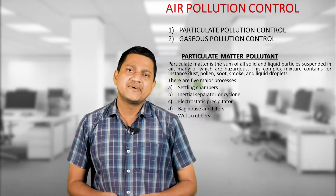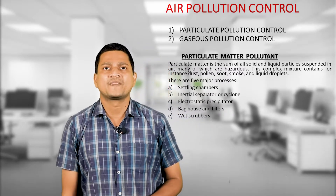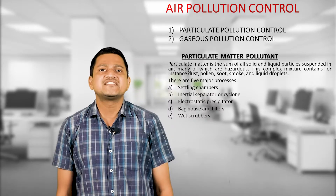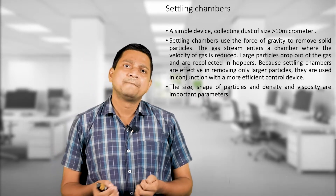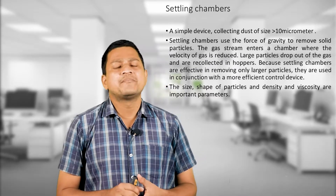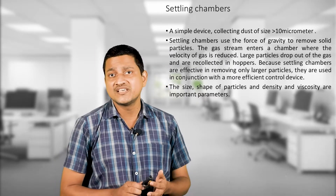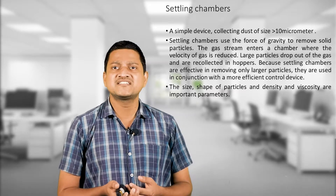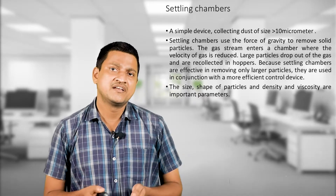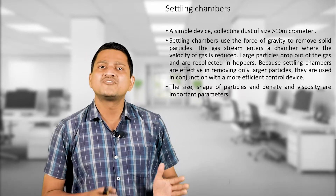By using these five different methods, we can control particulate matter pollution. First, we discuss the settling chamber. A settling chamber is a simple device collecting dust of size above 10 micrometers. The gas stream enters a chamber where the process of settling occurs.